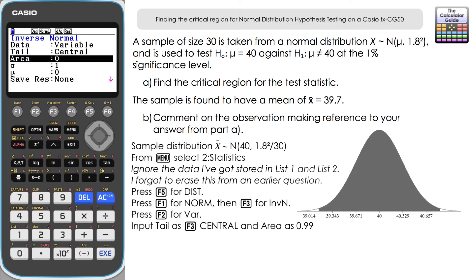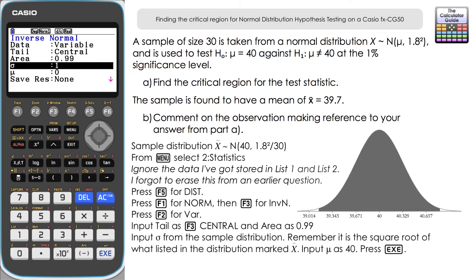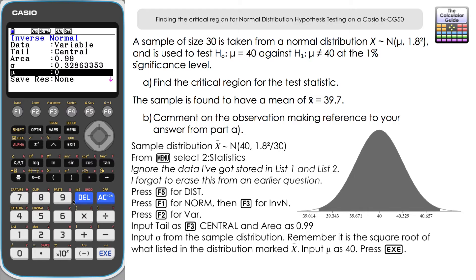Set the area to 0.99 to cover 99% of the distribution. For sigma, be careful: input the sigma from the sample distribution, which is 1.8 divided by the square root of 30 — not just 1.8. Pressing execute will display the decimal approximation. Set mu to 40 from the sample distribution.